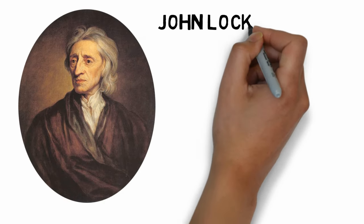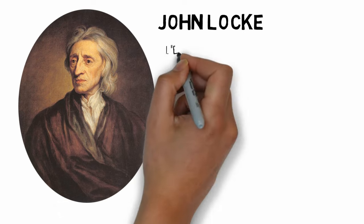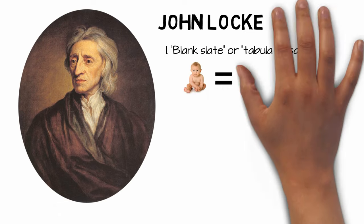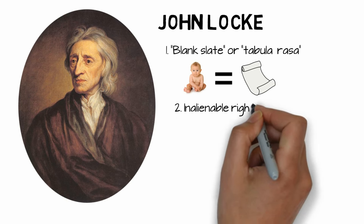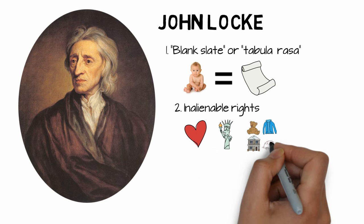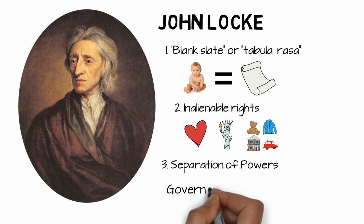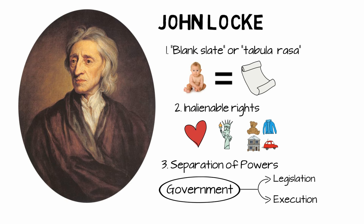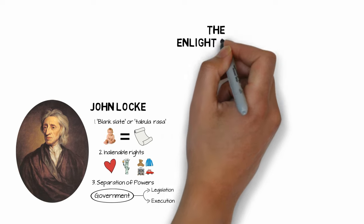John Locke had several other theories and ideas that have had huge impacts across the world, even well after he died. Three we've already discussed are his blank slate or tabula rasa theory, his description of inalienable rights of life, liberty, and property, and his insistence on the separation of the powers of government. It's important to keep in mind that not many of Locke's ideas are particularly original, but they gained the most popularity due to the Enlightenment.